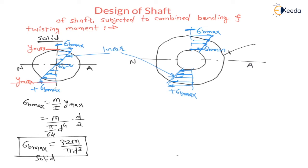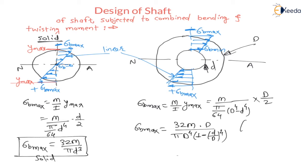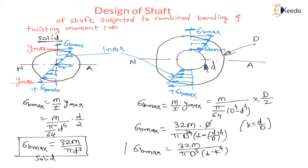For a hollow shaft with external diameter D and internal diameter d, σB_max = M·(D/2) / [π(D⁴−d⁴)/64], which simplifies to 32MD / [πD⁴(1−k⁴)], where k = d/D is the diameter ratio. This further simplifies to σB_max = 32M / [πD³(1−k⁴)].